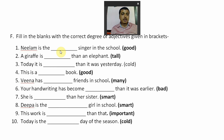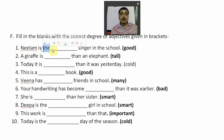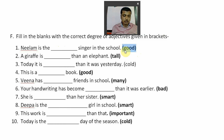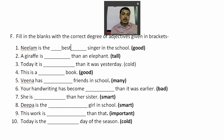Question one: 'Neelam is the ___ singer in the school.' Adjective given is 'good.' Before the blank you have 'the,' so you write it in superlative degree. Superlative of 'good' is 'best' — good, better, best. The answer: 'Neelam is the best singer in the school.' Question two: 'A giraffe is ___ than an elephant.' After the blank you have 'than,' so you write the comparative form of 'tall,' which is 'taller.' The answer: 'A giraffe is taller than an elephant.'